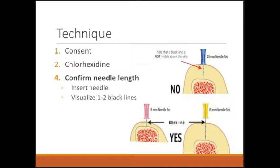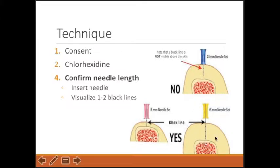To determine the correct needle size, insert the needle through the skin and try to touch the bone. If the medium blue needle can't reach the bone due to excess subcutaneous tissue, it's too short. With the correct needle — for example, the longer yellow one — you should be able to push through the subcutaneous tissue, touch the bone, and see one to two black lines above the skin. That's your goal. You wouldn't want to use the yellow needle on someone with very little subcutaneous tissue at the tibia, as you might see three black lines and risk drilling out the other side of the bone. So you want to see at least one but no more than two black lines.